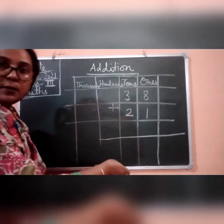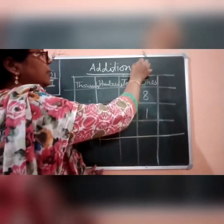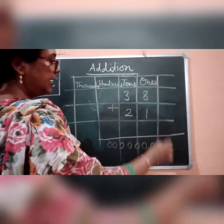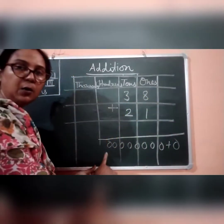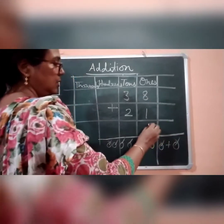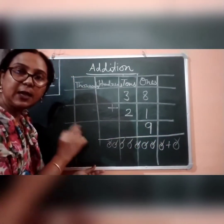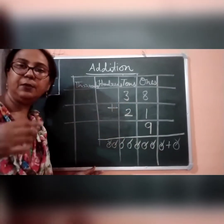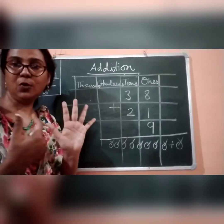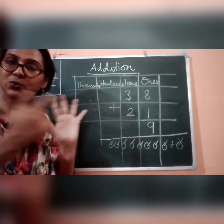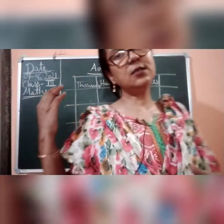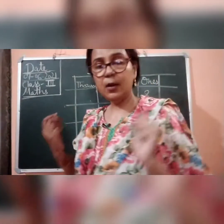We are going to add these two-digit numbers. Eight plus one: counting one, two, three, four, five, six, seven, eight, and nine — the answer is nine. And three plus two: one, two, three and one, two — this is five. This is very easy; we are just reminding ourselves of what we have learned.